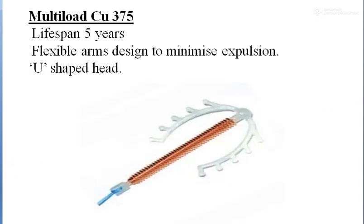The last second-generation device is the Multiload Cu 375, where 375 indicates the copper surface area. It is licensed for five years. This device has a U-shepherd design rather than a T-shepherd, and its arms are flexible to minimize expulsion. The failure and expulsion rates are around 50 percent compared to other copper T devices.